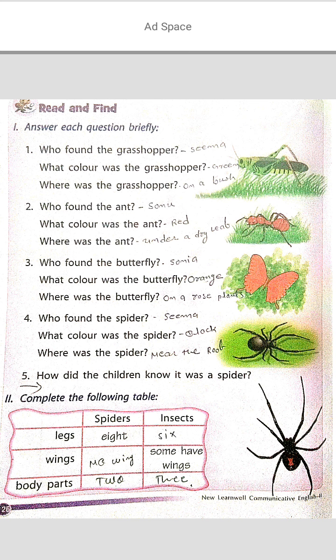Question number three: who found the butterfly? Sonia found the butterfly. What color was the butterfly? Orange color. Where was the butterfly? On a rose plant. Pause the video and complete it.